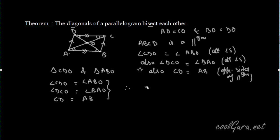Therefore by AAS or ASA congruence axiom, these two triangles are congruent. Triangle CDO is congruent to triangle ABO.